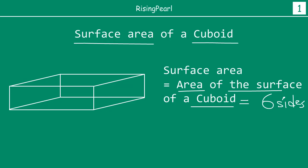This is the first side — the front side, which we are highlighting in blue. Similarly, there will be a back side, which is going to have the exact same area as the front side. So the front and back make two of the six sides, both highlighted in blue. Equal areas are highlighted in the same color.